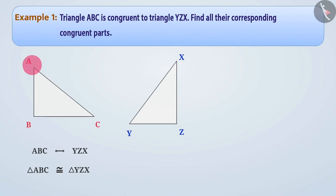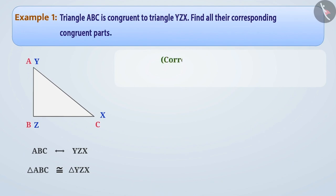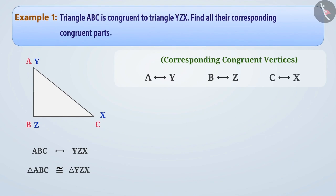When the vertices ABC of triangle ABC are placed on vertices YZX of triangle YZX in the same order, then they cover each other completely. Hence, the corresponding congruent vertices are: A is matching with Y, B is matching with Z, and C is matching with X. When the sides AB, BC, and AC of triangle ABC are kept over YZ, ZX, and YX of triangle YZX, then they cover each other completely.